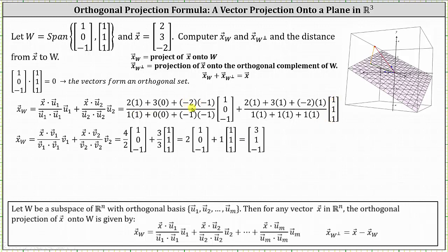Simplifying: for the first fraction, the numerator is 2 + 2 = 4, and the denominator is 1 + 1 = 2, still times vector (1, 0, -1). For the second fraction, we have 2 + 3 + (-2) = 3 in the numerator, and 3 in the denominator, times vector (1, 1, 1). Simplifying again, the final result is the vector (3, 1, -1), which is the orthogonal projection of vector x onto W.